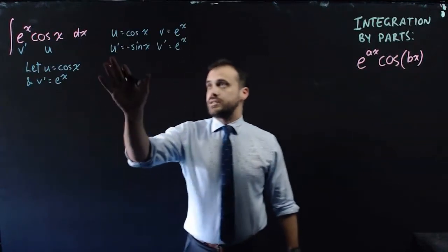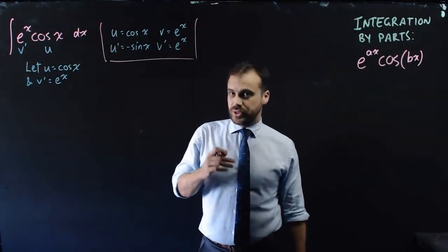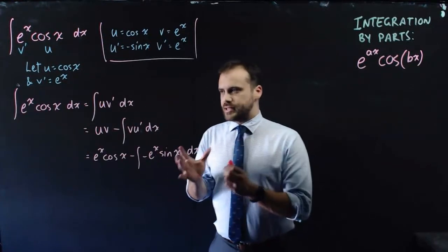u equals cos x, v' equals e to the x, and this is what u, u dash, v, and v dash are equal to. And now we can use our integration by parts formula. Once we do that, we end up in this neat little place here.